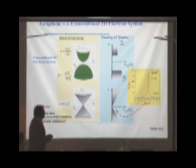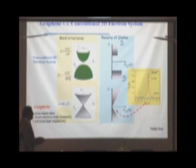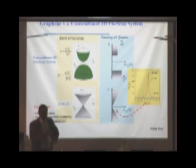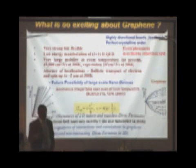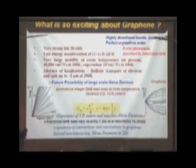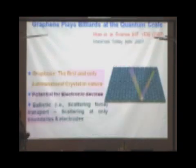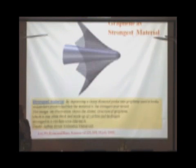From this review article, this is the band structure for a conventional semiconductor or metal, and this is for graphene. Because of this, it's a high-school textbook exercise to show that the density of states will be linear in energy. Many interesting consequences arise compared to a conventional 2D electron gas, and this linearity is at the back of many interesting physics. Now, what is so exciting about graphene? First, of course, it is very strong but flexible.